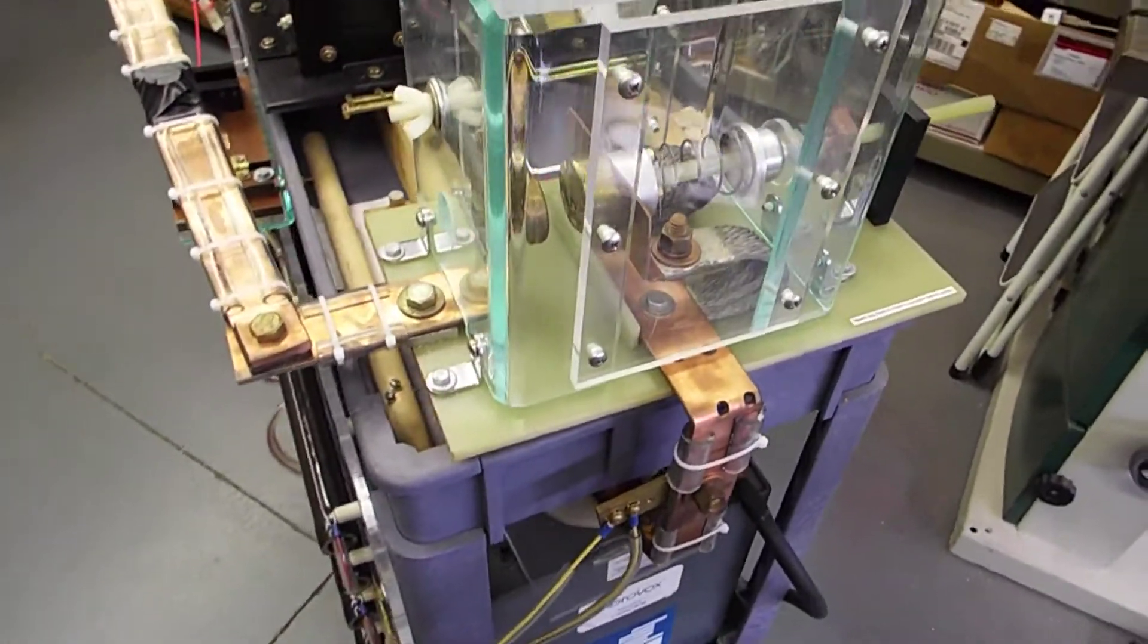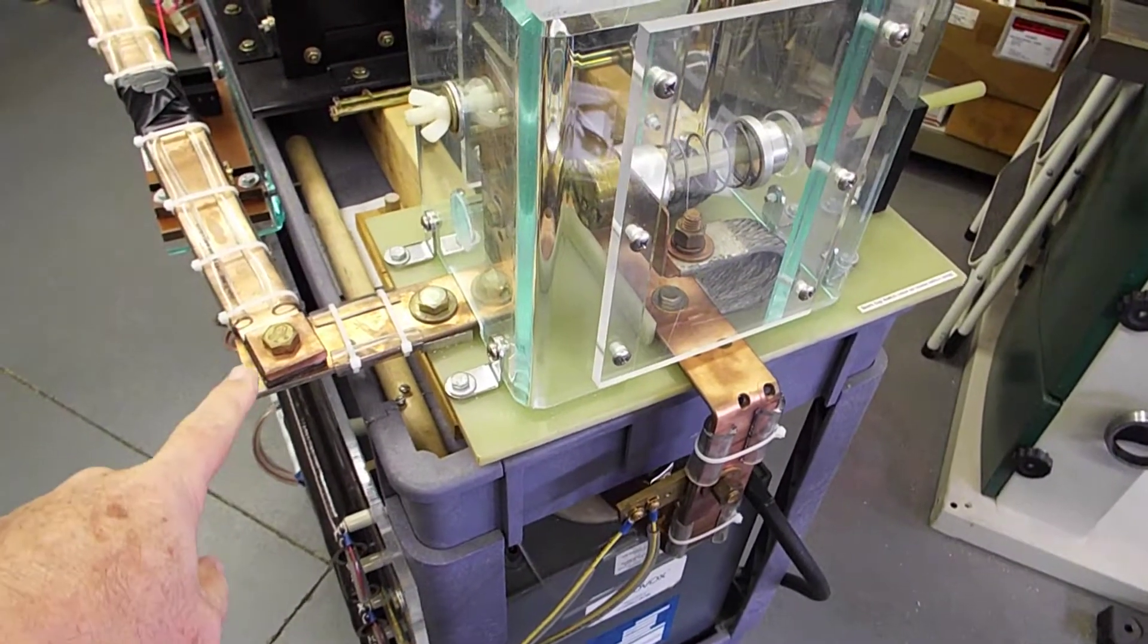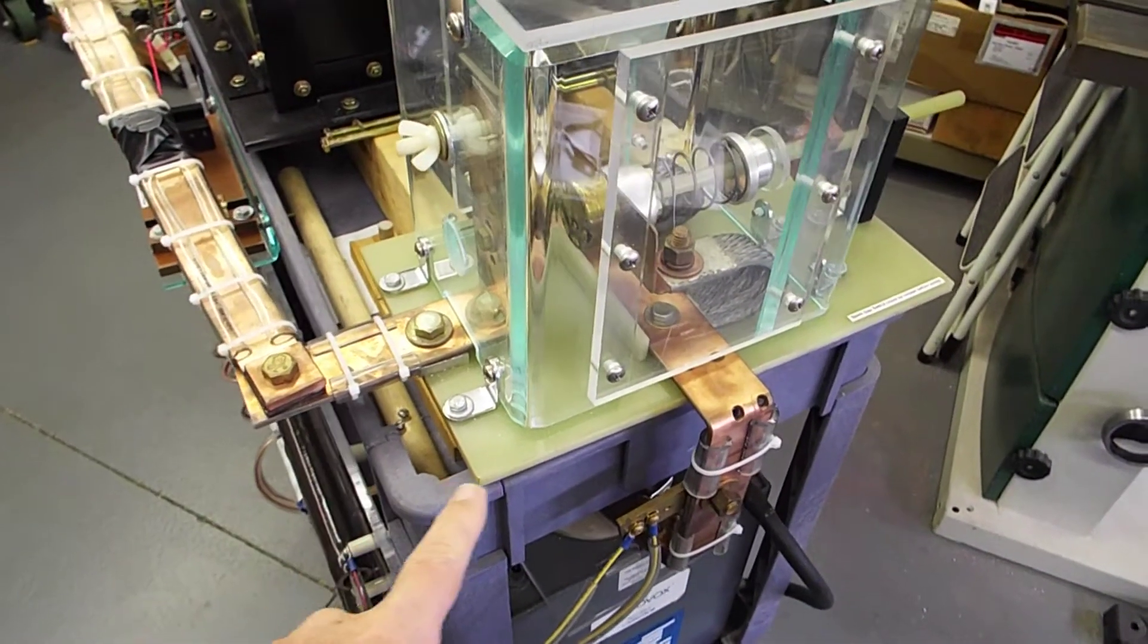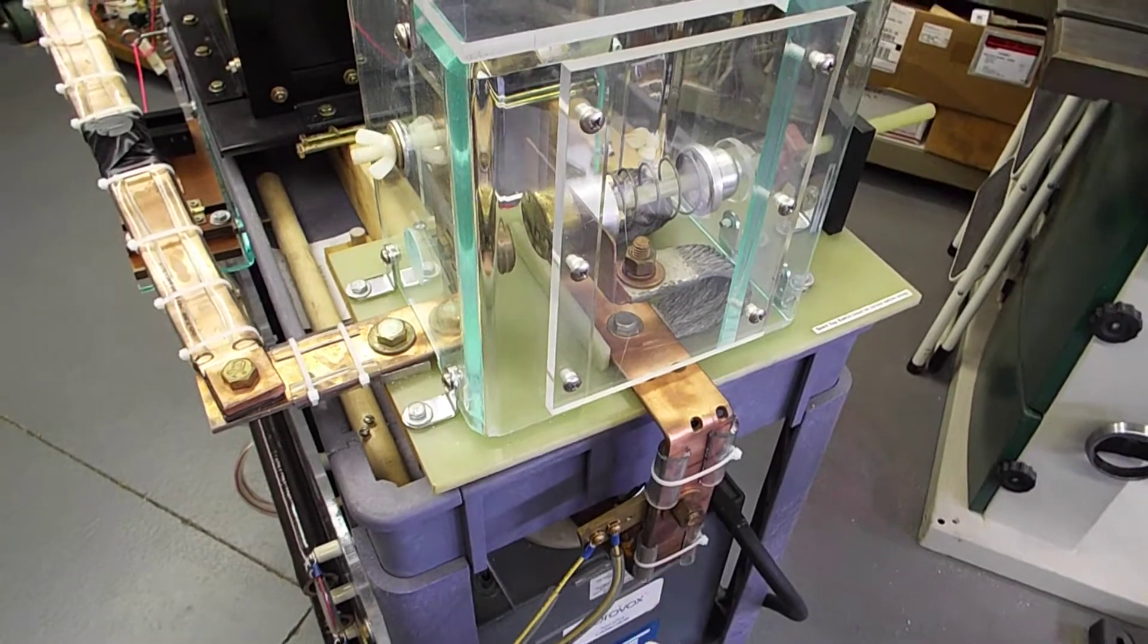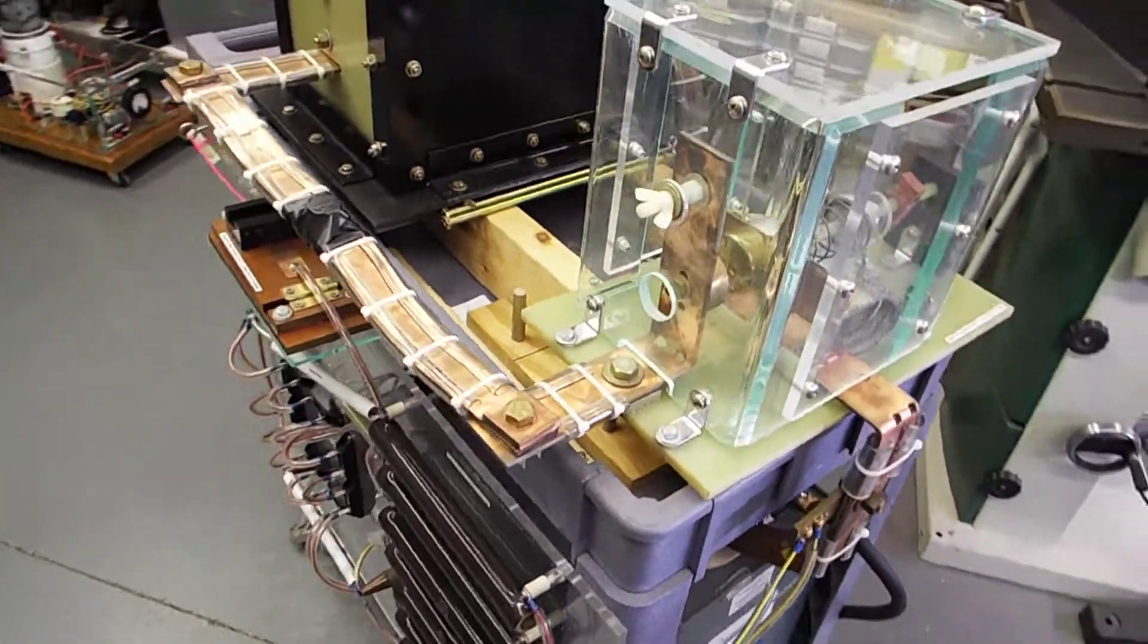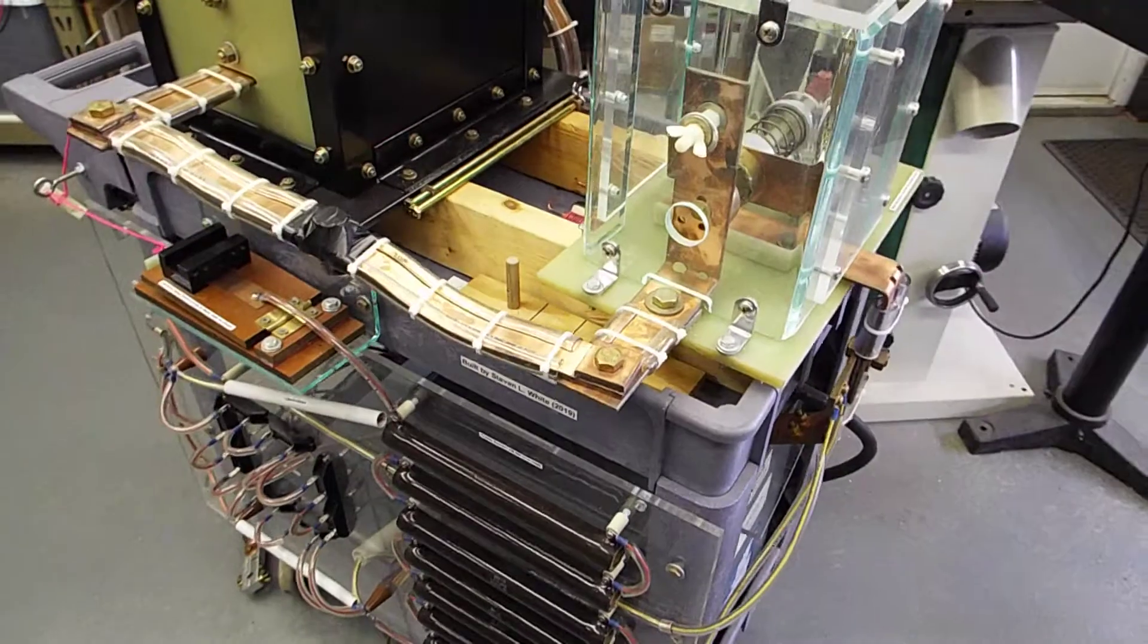You can see the extremely heavy copper bus bars used because this can handle currents of 50 to 100,000 amps and possibly even higher.